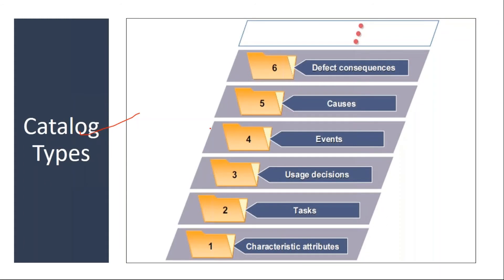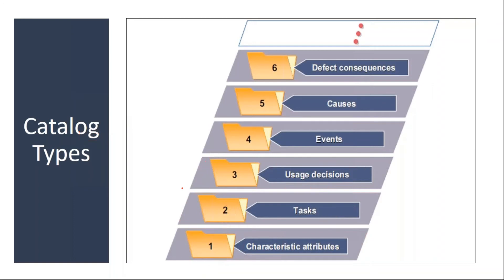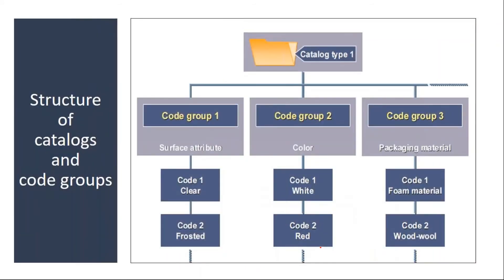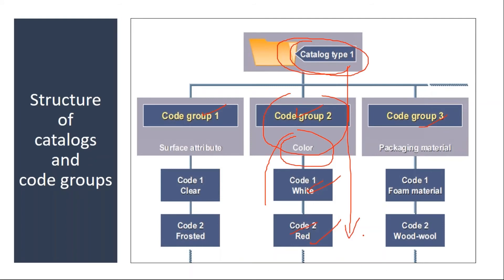The catalog type tells you what type of code group it is — whether it is a characteristic attribute, a task, a usage decision, etc. Today we will be creating code groups belonging to the catalog type 'Characteristic Attribute.' The other types — tasks, usage decisions, causes — we will discuss when we get to results recording, usage decisions, and quality notifications. If you look at the next screen, you can see: color is a code group, and red and white are codes clubbed under it. This code group belongs to catalog type 'Characteristic Attribute.'